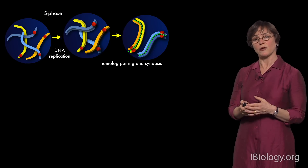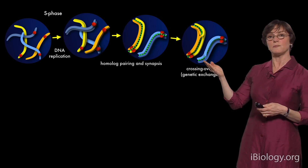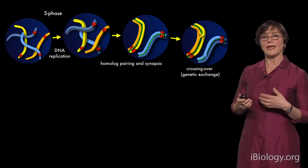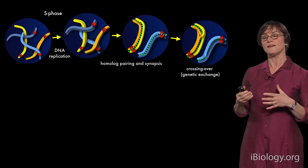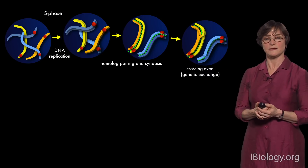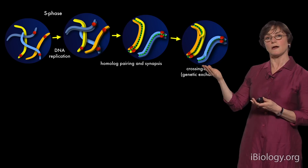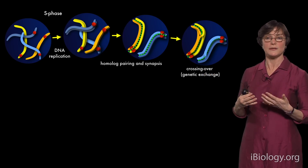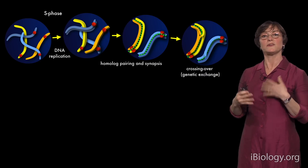Chromosomes also have to undergo recombination — DNA gets cut and repaired in a special way that physically connects homologous chromosomes. This process of recombination is thought to be the raison d'être of meiosis. It's thought to be the reason eukaryotes have achieved such diversity and complexity, because recombination enables beneficial mutations to be separated from deleterious ones, allowing evolution to happen at an accelerated pace compared to asexual reproduction.